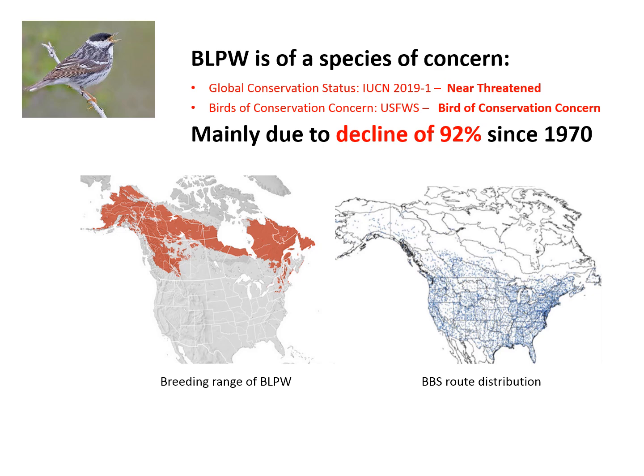We chose this species because there's been a huge decline since 1970 when the Breeding Bird Survey began, according to the BBS. But as you see from the map on the left, the breeding range of Blackpoles in the boreal forest is quite far north, whereas the distribution of BBS routes from the map on the right is very southern and there's not a whole lot of overlap.